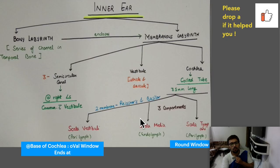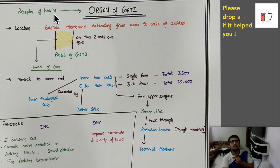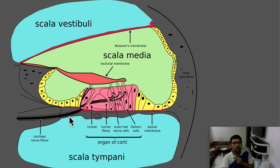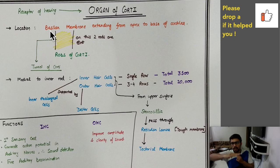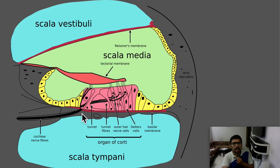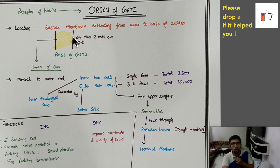The most important part right now is the scala media, because it contains the receptor of hearing — the organ of Corti. The location of the organ of Corti is on the basilar membrane, and it extends over the entire basilar membrane from the apex to the base of the cochlea.